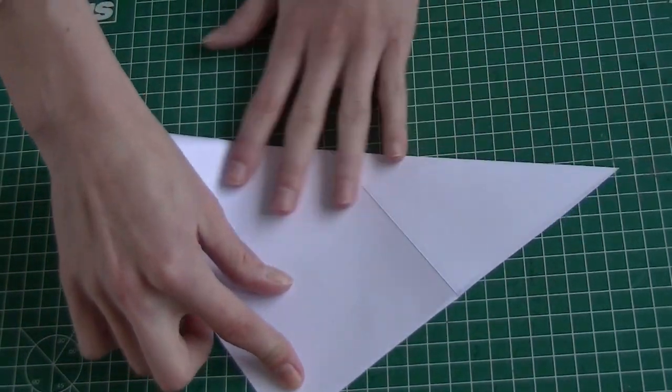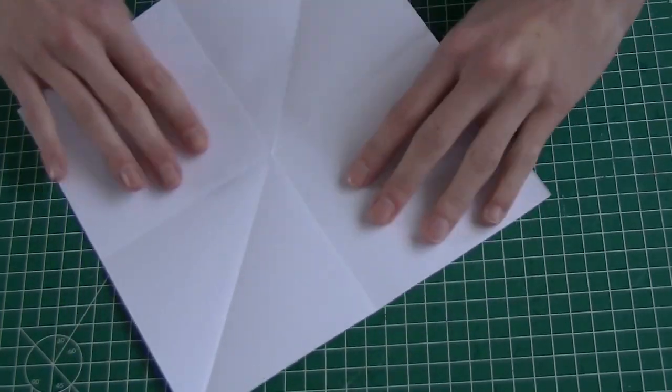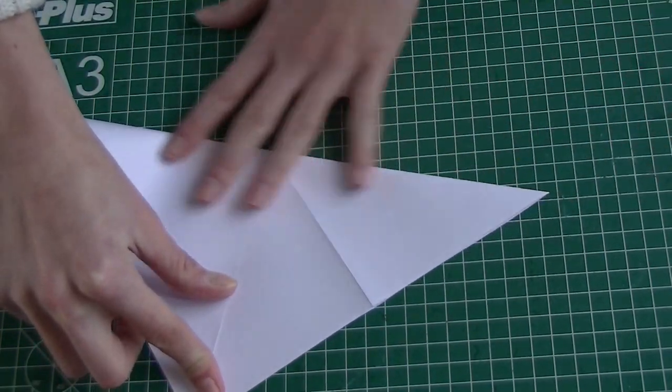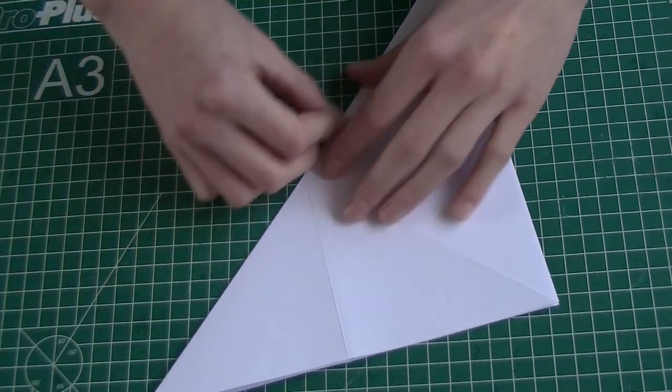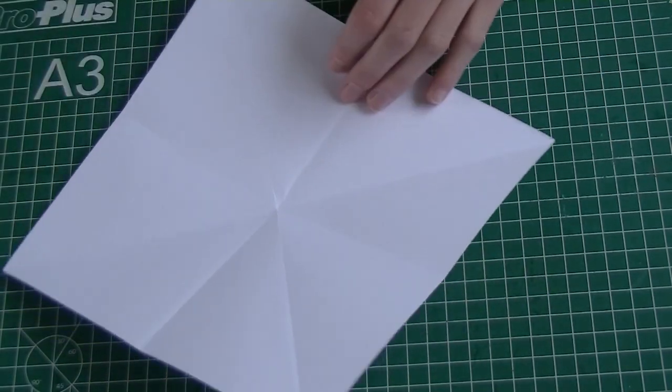Turn it over and fold it twice in half diagonally. Fold the corners to the center.